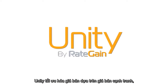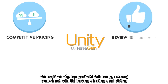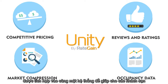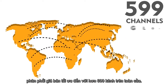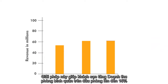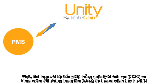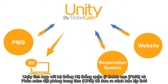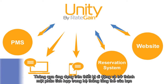Unity optimizes prices based on collective pricing, reviews and ratings, market compression, and occupancy data. The same system helps hotels distribute these optimized prices to over 600 channels globally. It increases RevPAR by up to 15%. Unity integrates with your PMS and CRS systems and delivers real-time alerts via a mobile app, becoming an integral part of your ecosystem.